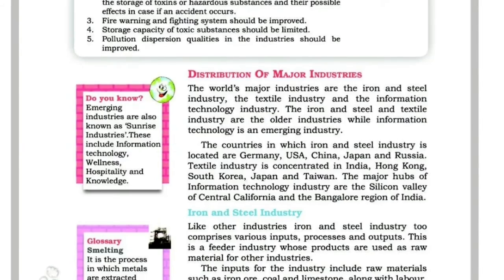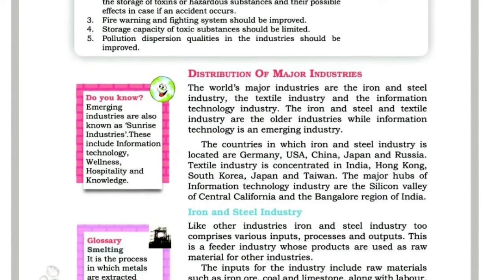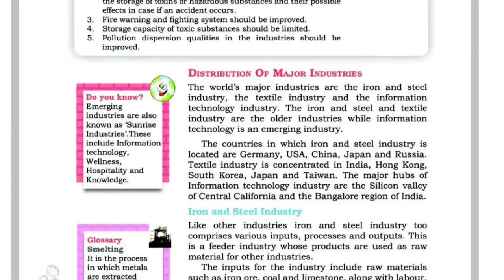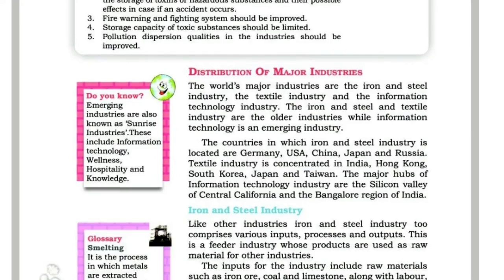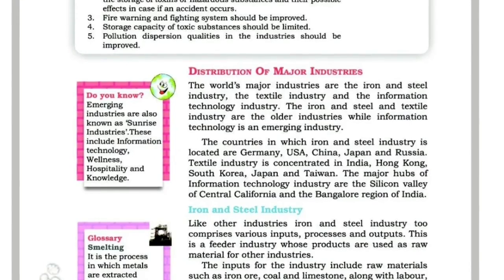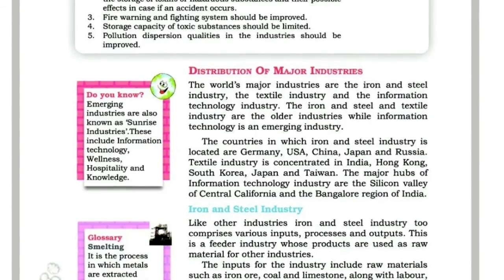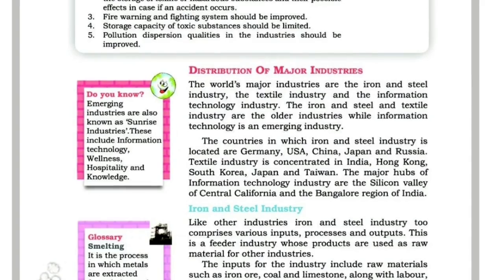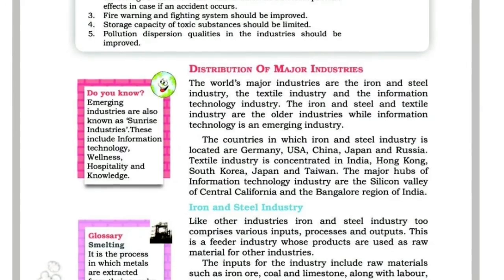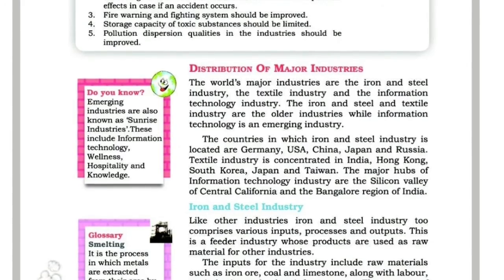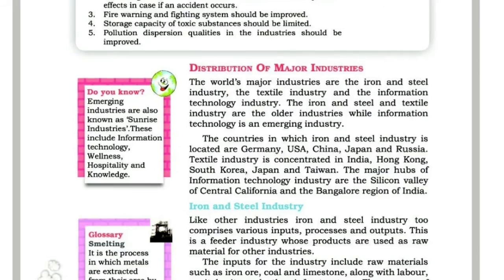The countries in which the iron and steel industry is located are Germany, USA, China, Japan and Russia. The textile industry is concentrated in India, Hong Kong, South Korea, Japan and Taiwan.